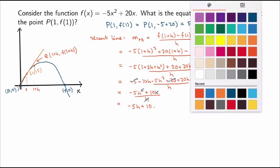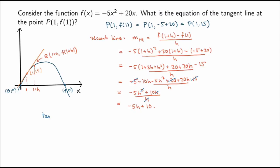That's the secant line. What I'm interested in is the tangent line. The slope of the tangent line is the limit where I send point Q to P — that is, the limit as h → 0 of the secant slope. The actual formula is the limit as h → 0 of (-5h + 10).